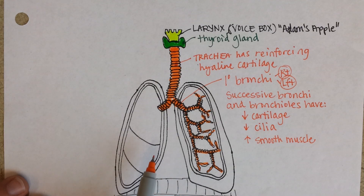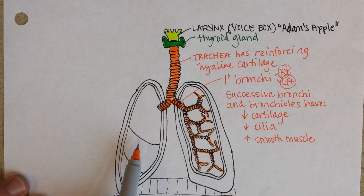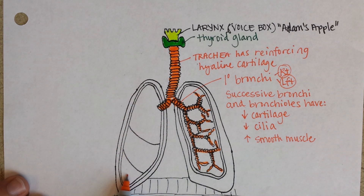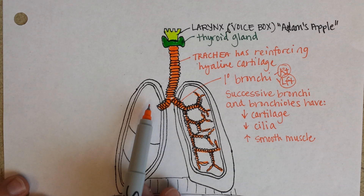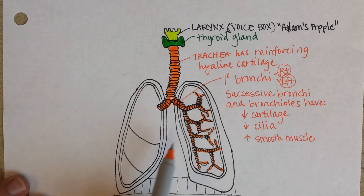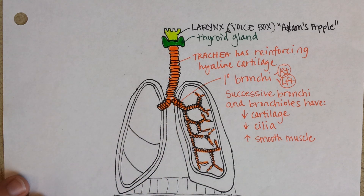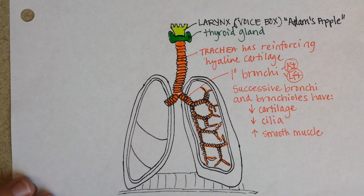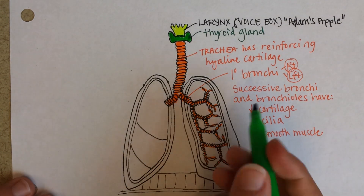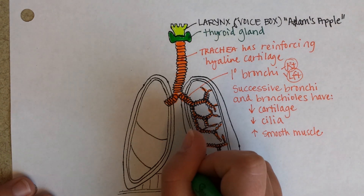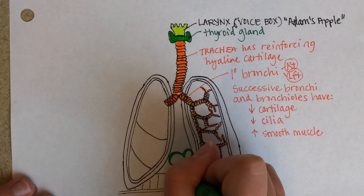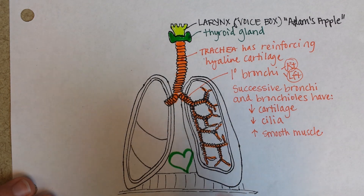Over on this side I've shown you three lobes that the right lung is divided into. The left lung only has two lobes — it's actually a little bit smaller, and that's because the heart is right here between the two of them.